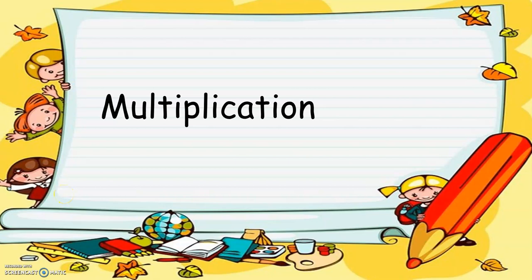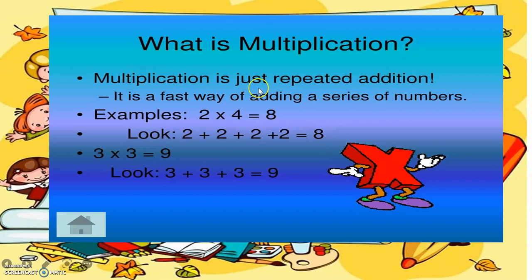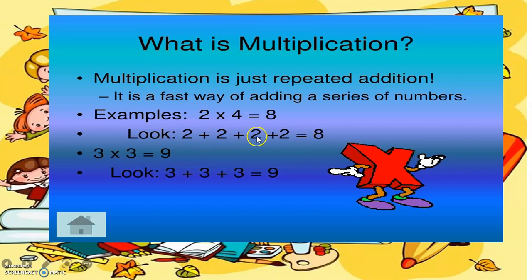Hello, good afternoon everyone. This is Teacher Christine. Today we're going to learn about multiplication — that is 'times.' So what is multiplication? Multiplication is just repeated addition. It is a fast way of adding. For example, two times four equals eight — so repeated addition: two plus two plus two plus two equals eight, or two times four equals eight.